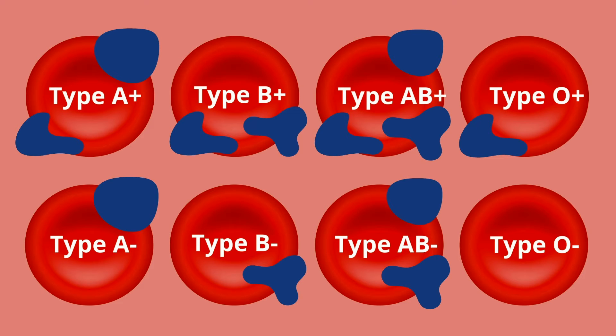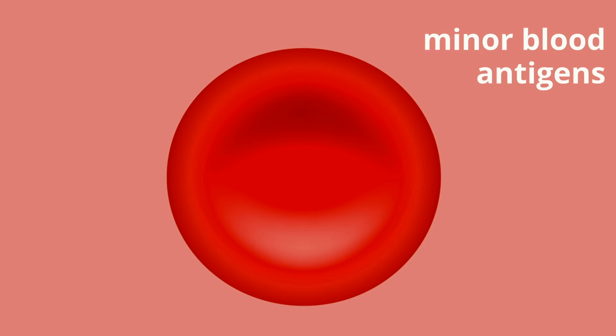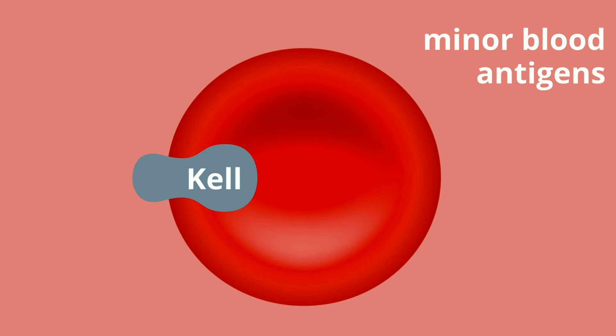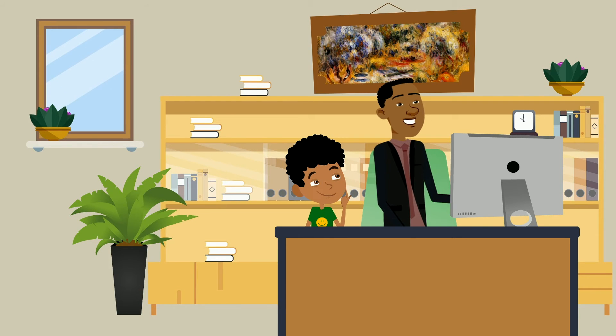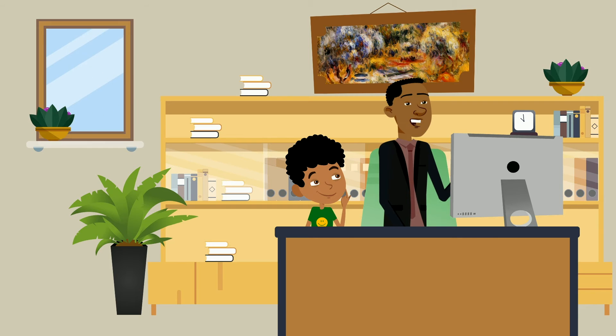There are over 300 other antigens a person could have, but they are not usually listed in the blood type name. These are called minor blood antigens. Some of the most important ones for a person with sickle cell disease to know are named C, E, and KEL. I wonder why you need to know this information about major and minor antigens?